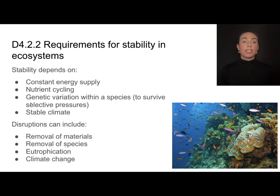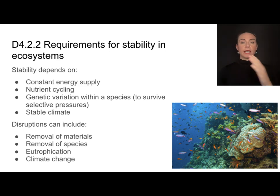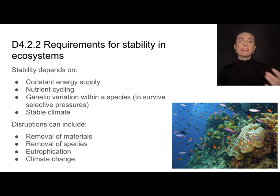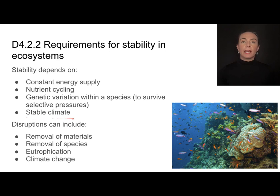We need genetic variation within a species to survive the various selective pressures that an ecosystem can contain at different points in time, and a relatively stable climate — thinking about things like temperature and precipitation.